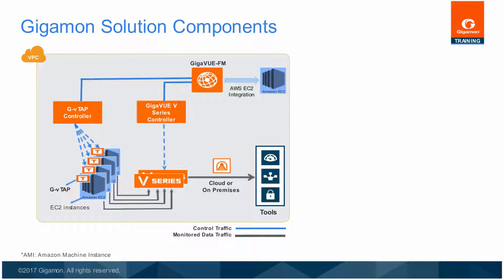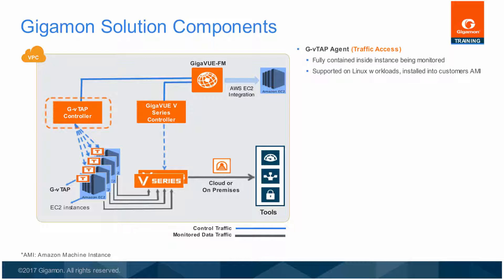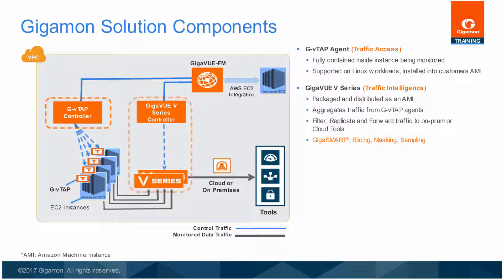The components of the Gigamon Visibility Platform solution in AWS include the following. A GVTAP is a user space agent deployed in the Elastic Compute Cloud instance to mirror selected traffic and deliver it to Gigaview V-Series visibility nodes. It is a single agent that can replace multiple vendor agents to consistently access and forward traffic. The Gigaview V-Series visibility nodes are available as an Amazon Machine Image that aggregates traffic from multiple agents, and can filter, replicate, and forward traffic to tools on enterprise premises or in the public cloud. The V-Series nodes also support GigaSmart by allowing sampling, masking, or slicing traffic before it reaches the tools.